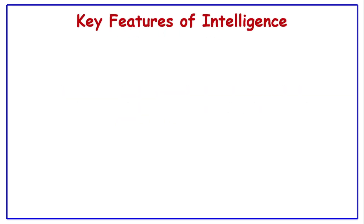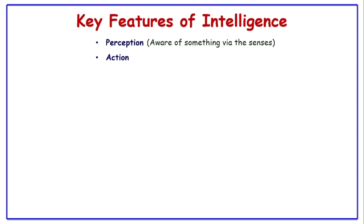Now we will discuss some of the key features of intelligence. The first one is perception. It is fundamental to intelligence, both for humans as well as machines. It acts as the bridge between the raw data we take in from the world and our ability to understand and interact with it. Then action — intelligence isn't just about having knowledge but what you do with it. Using your knowledge and understanding to solve problems, make decisions, and ultimately adapt to the situation is action.